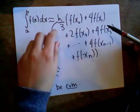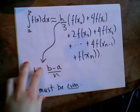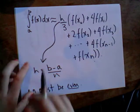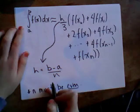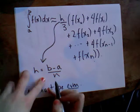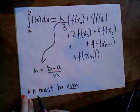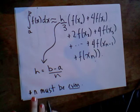And this all is multiplied by h over 3. So h is equal to the interval here, b minus a, divided by n subperiods. The important part here is that n must be even for this formula to work out.